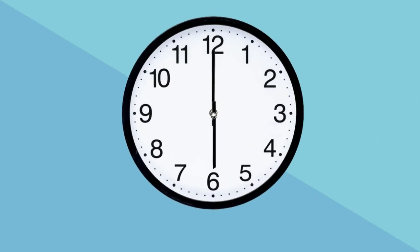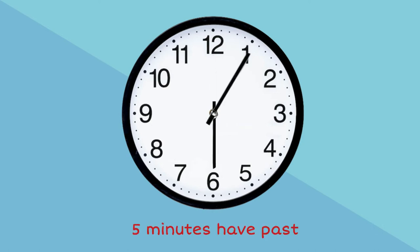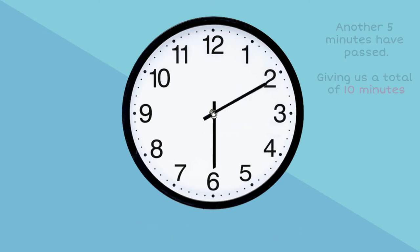Can you see the dashes on the clock between the numbers? Each dash represents 1 minute and there are a total of 5 dashes between each number. So that means that 5 minutes pass between each number. So when the long hand moves from 12 to 1, 5 minutes have passed. And if it moves from 1 to 2, another 5 minutes has passed, giving us a total of 10 minutes.